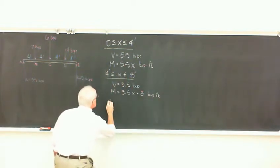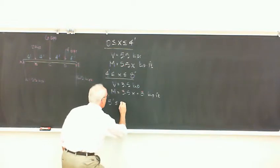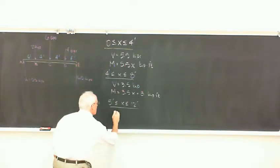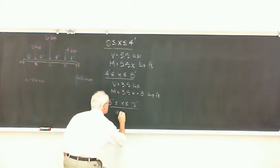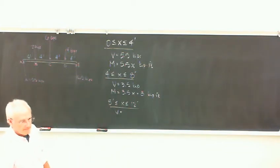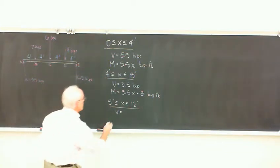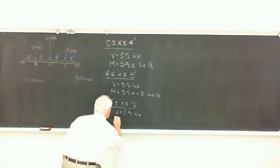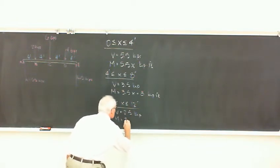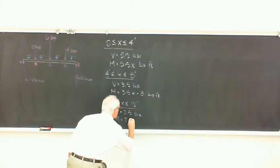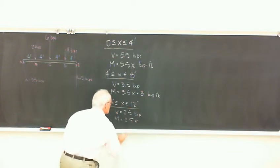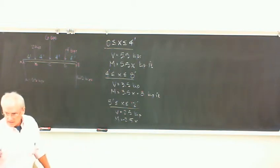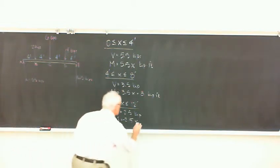Then the next section had a shear of 2.5, and the moment was negative 2.5x plus 56.